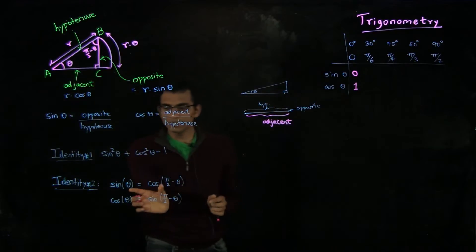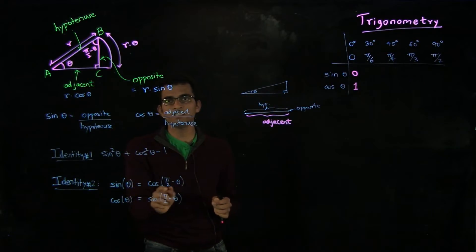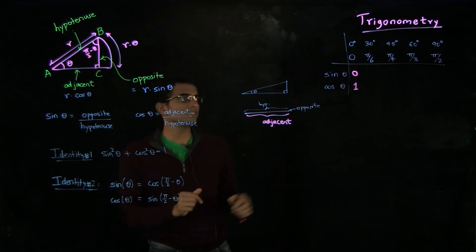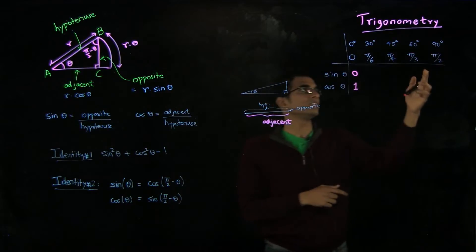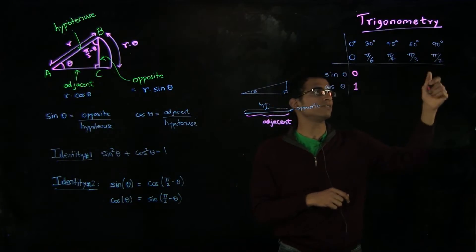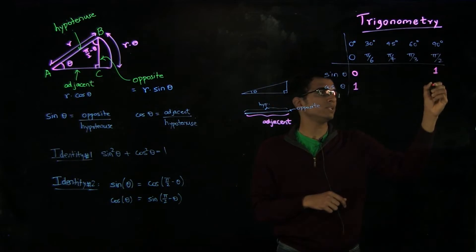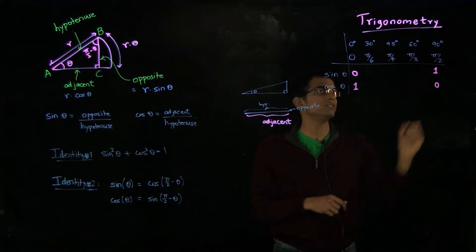Using the observation that sin of theta is cos of Pi by 2 minus theta, we can infer the sines and cosines of 90 degrees. So sin of 90 degrees is 1 and cos of 90 degrees is 0.